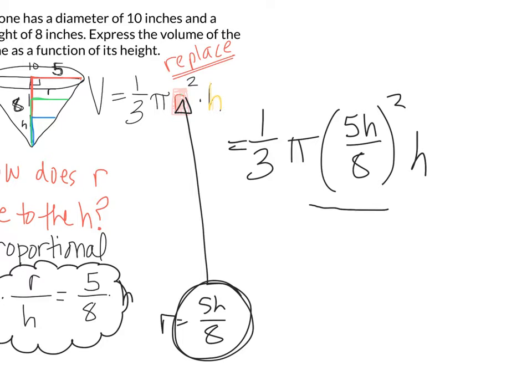Now we have radius as just a function of height. Let's do some simplifying here. We'll square the 5, square here, square there. So we have one-third pi.